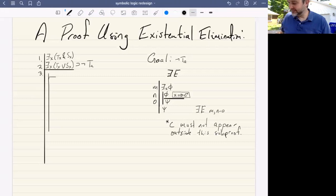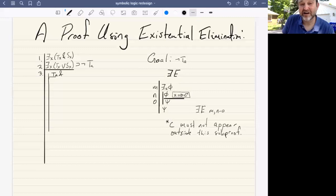that we're going to give a name, let's call it A to the object that is both T and S. So we will say T A and, oh, sorry, cannot be T A because A appears outside of this subproof. So we're going to say T B and S B. Okay.